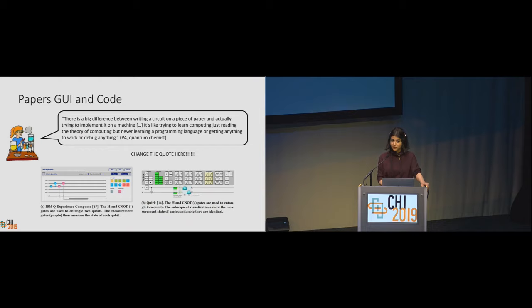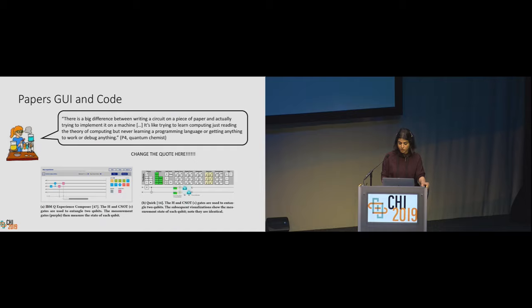Despite the numerous tools available for programming quantum systems, low-fidelity tools have a strong foothold in the day-to-day workflow of quantum scientists. Visual tools like IBM's Composer and Quirk are also helpful in applying what has been drawn on these low-fidelity tools, using a circuit-like metaphor in which each qubit is represented by a horizontal line. One quantum chemist said, 'There's a big difference between writing a circuit on a piece of paper and actually trying to implement it on a machine. It's like trying to learn computing just by reading the theory, but never learning a programming language or getting anything to work or debug anything.'